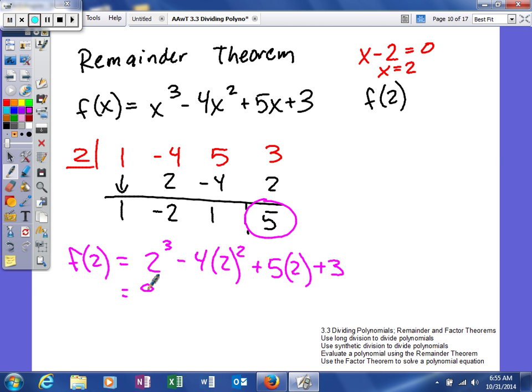So when you cube this, you get 8, and that's going to give us 4, negative 16, and then plus 10, plus 3. When you add all these together, you'll get 2 plus 3, which is going to be equal to 5. So as you can see, the remainder theorem allows us to find that remainder by doing different math.